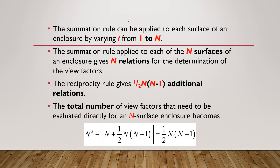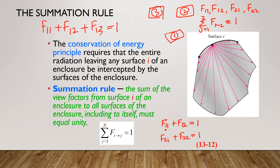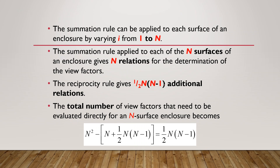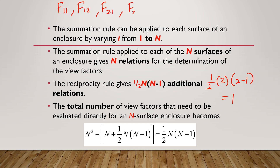So we have four view factors: F1-to-1, F1-to-2, F2-to-1, and F2-to-2. How many of these actually need to be calculated? Using the relationship n(n−1)/2, for two surfaces: we get only one view factor that needs to be independently determined — from which you can derive the others.